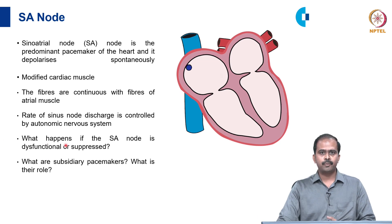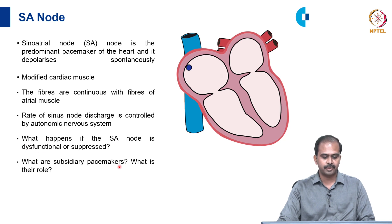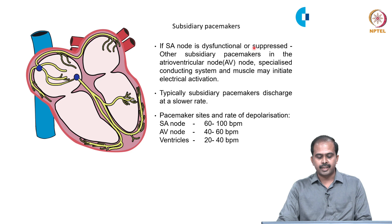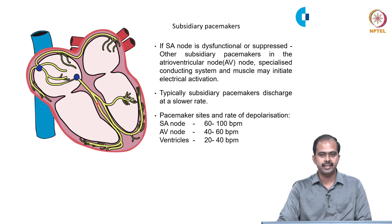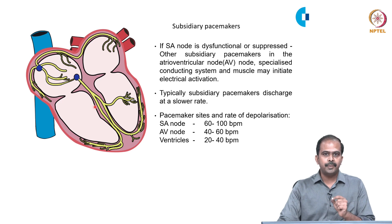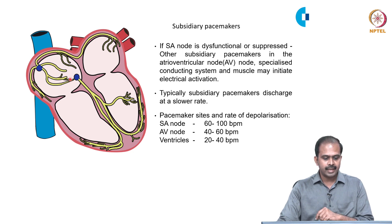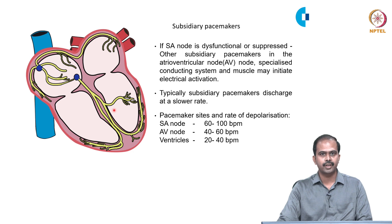If the SA node is dysfunctional or suppressed, in order to continue heart beating, other subsidiary pacemakers in the AV node, specialized conducting system, and muscle may initiate electrical activation. However, subsidiary pacemakers typically discharge at a slower rate. The SA node depolarizes at 60 to 100 beats per minute, the AV node at 40 to 60 beats per minute, and the ventricles at 20 to 40 beats per minute.